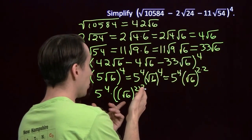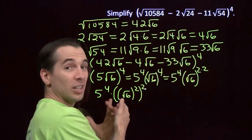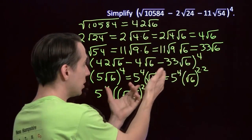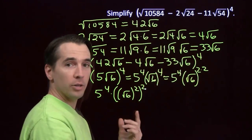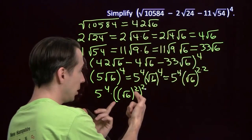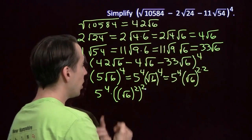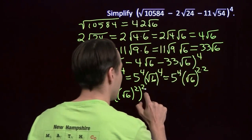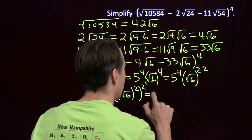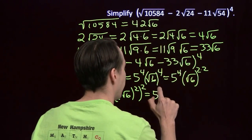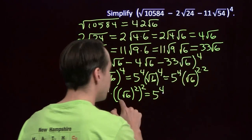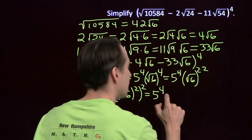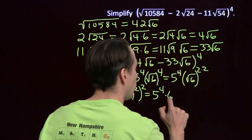We can deal with the square of the square root of 6 a lot easier than the fourth power of the square root of 6, because the square of the square root of 6 is just 6. So this is 5 to the fourth times 6 squared.